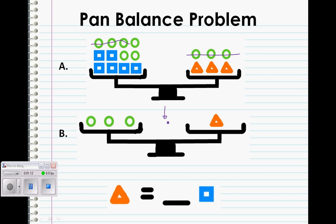The second clue is telling us that one triangle is equal to three circles. We have three circles here in pan A, so we can replace them with a triangle.